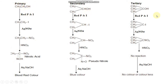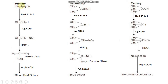The alcohol undergoes reaction with red phosphorus and iodine to give an alkyl halide. That alkyl halide is treated with silver nitrite, AgNO₂, to give a nitroalkane. This nitroalkane is then reacted with nitrous acid, HNO₂. Nitrous acid is generally produced by treating sodium nitrite NaNO₂ with HCl to get HNO₂. The nitroalkane reacts with nitrous acid to give nitrolic acid in the case of primary alcohol. Followed by reaction with aqueous alkali, we get a blood red colour for primary alcohol.